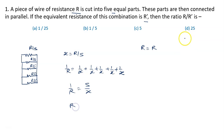So net resistance, that is R dash, basically. So R dash can be written as X upon 5, and value of X is R upon 5. So R upon 5 into 5, that is R upon 25.